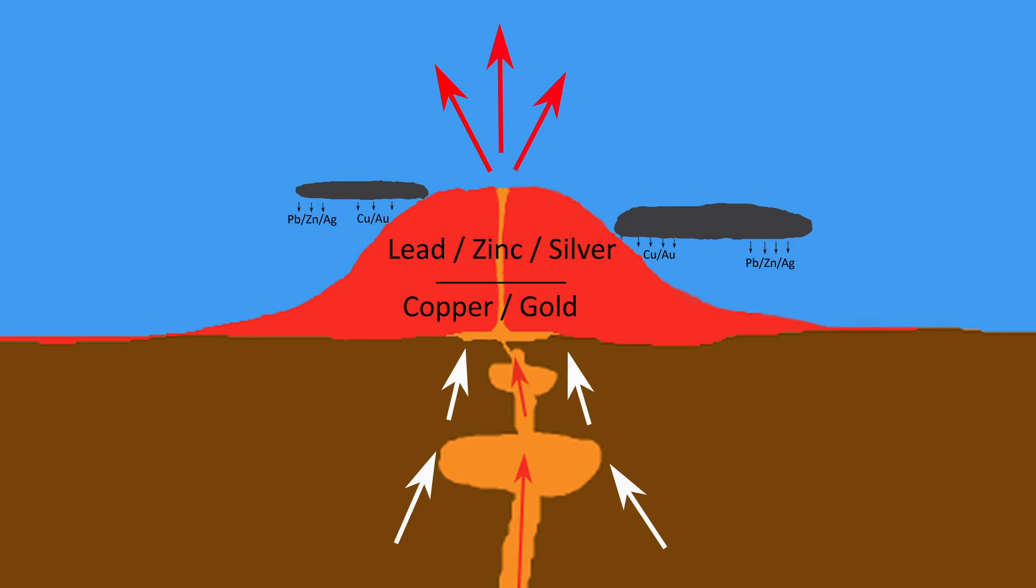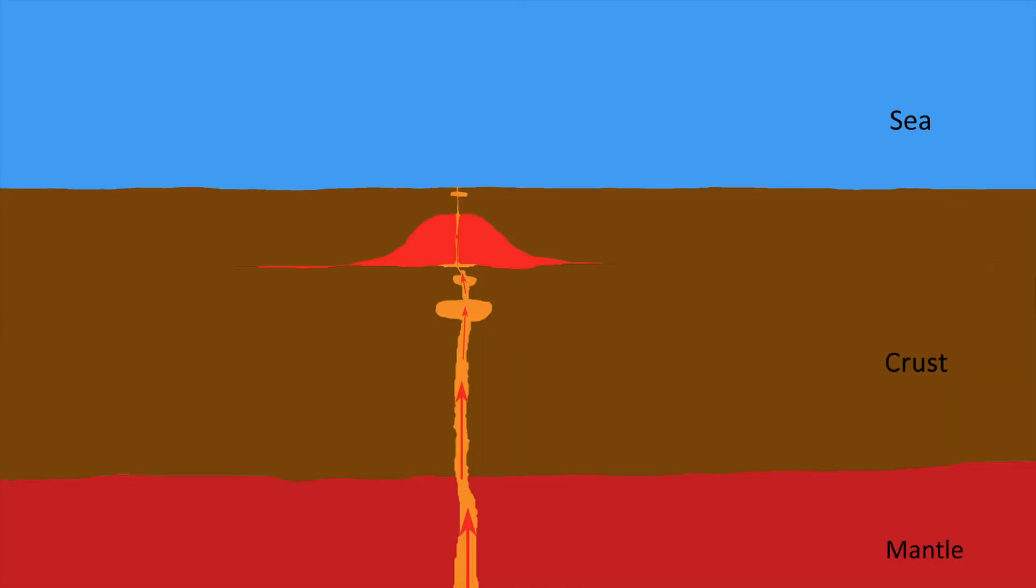These deposits form over tens to hundreds of thousands of years. Once the eruptions cease and we return to a much less violent period of magma oozing from the extension faults onto the seafloor, sediments have time to accumulate and bury the volcanic pile.